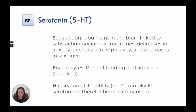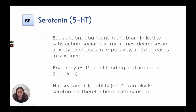Serotonin — remembered with SEN — affects our satisfaction and socialness but can also be linked to migraines. It leads to decreases in anxiety, impulsivity, and sex drive. It affects our erythrocytes, so if we are increasing serotonin we have to watch for bleeding. It also affects nausea and GI motility — for example, Zofran blocks serotonin and therefore helps with nausea.